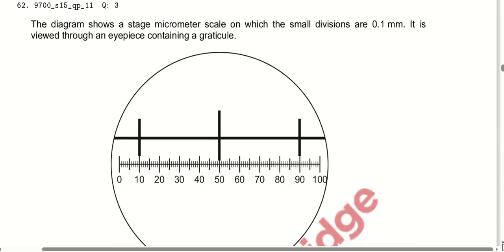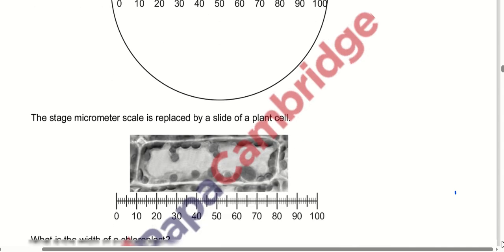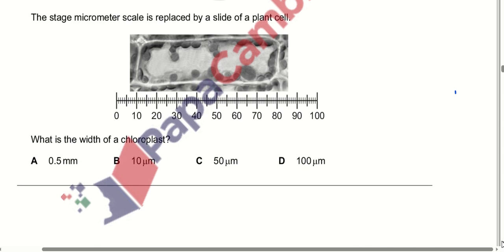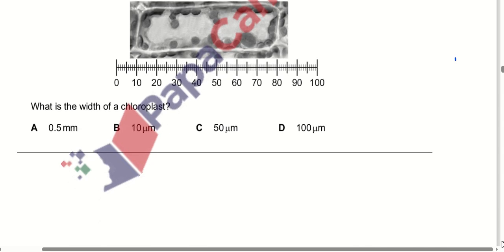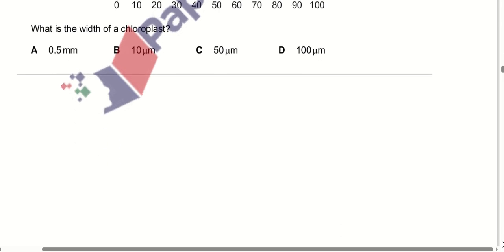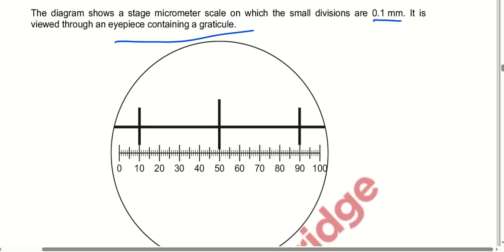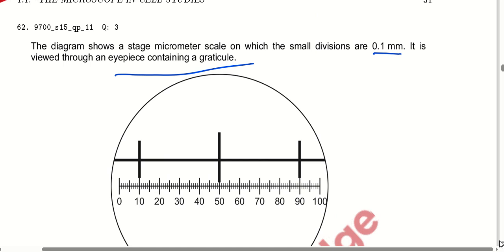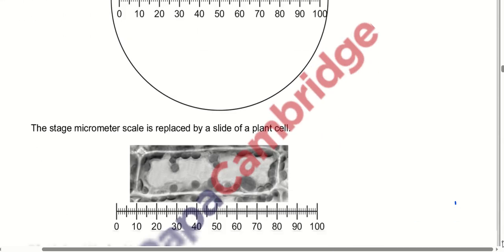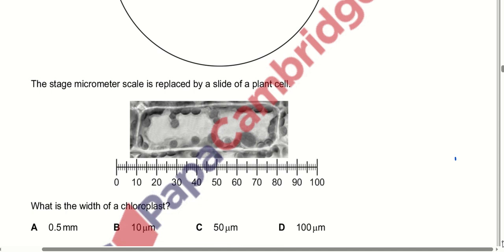The diagram shows a stage micrometer scale with small divisions of 0.1 mm, viewed through an eyepiece containing a graticule. The stage micrometer scale is replaced by a slide of a plant cell. The width of the chloroplast comes out to be 10 micrometres.